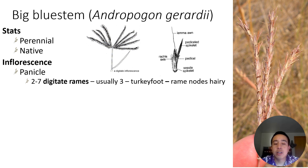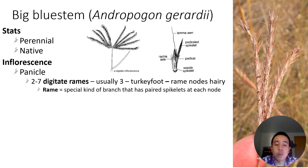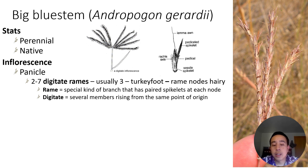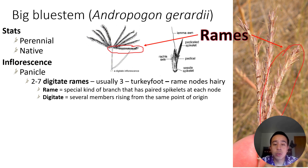Big bluestem specifically typically has three digitate rames, and you can see that in the image above. Sometimes it kind of looks a little bit like a turkey foot, because the rame nodes are also a little hairy. A rame is a special kind of branch that has paired spikelets at each node. Digitate means several members rising from the same point of origin — you can see in the diagram there's a single point where all those rames are coming out of. I've circled a couple of the rames in the various diagrams for you to fully grasp what a rame is.